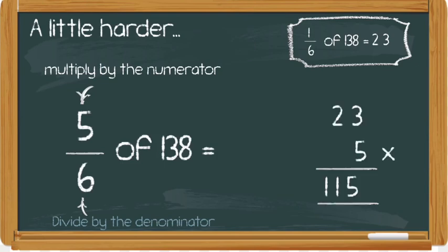If you have got a proper fraction where your numerator is smaller than your denominator but you have somehow ended up with an answer that is bigger than the number that you were finding a fraction of, you would know that you'd gone wrong somewhere. For example, here if I had got an answer that was bigger than 138 I would know I'd gone wrong in my method because my answer cannot possibly be bigger than the amount that I'm trying to find a piece of if I've got a proper fraction.